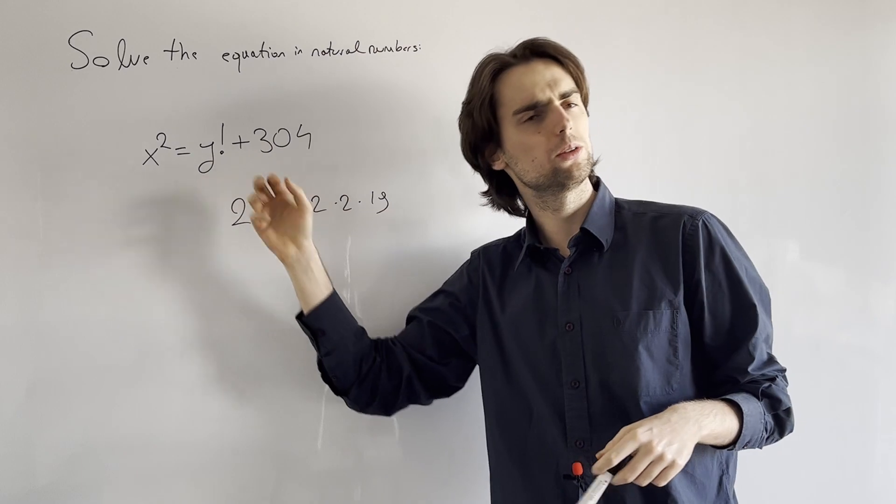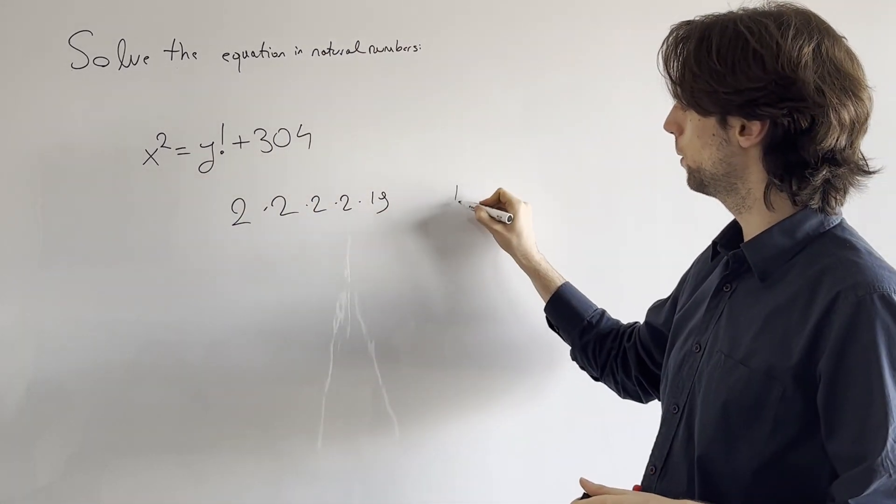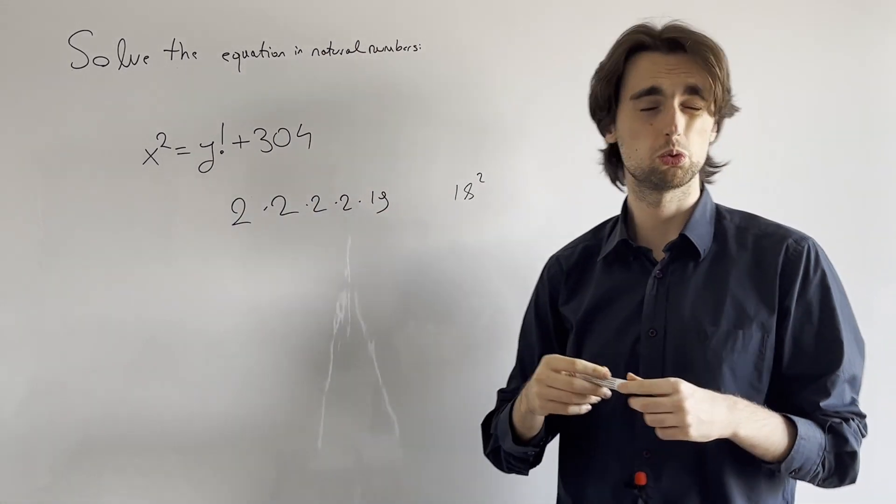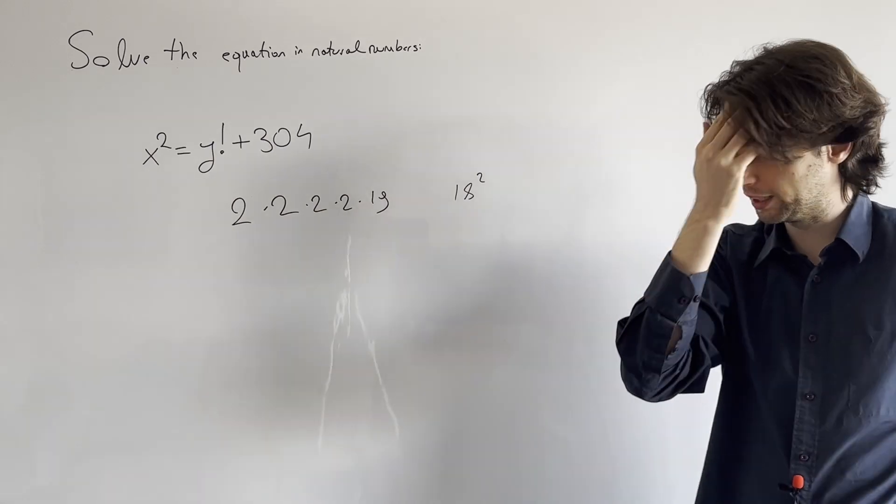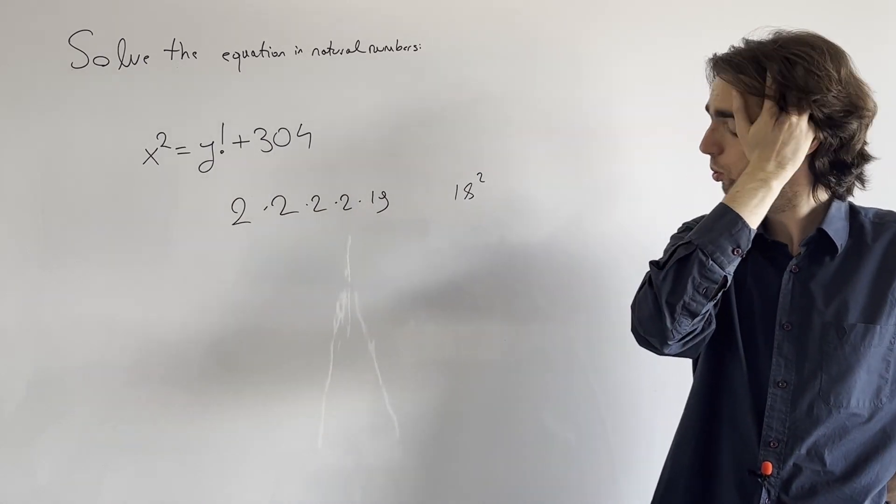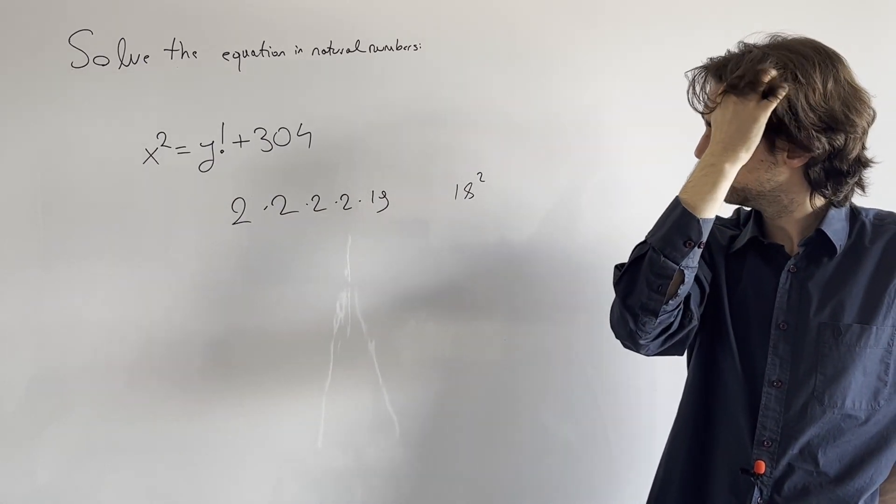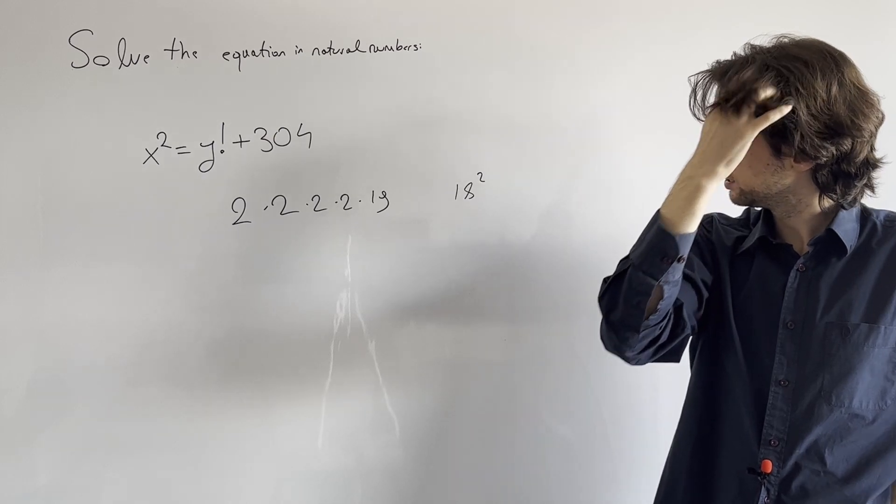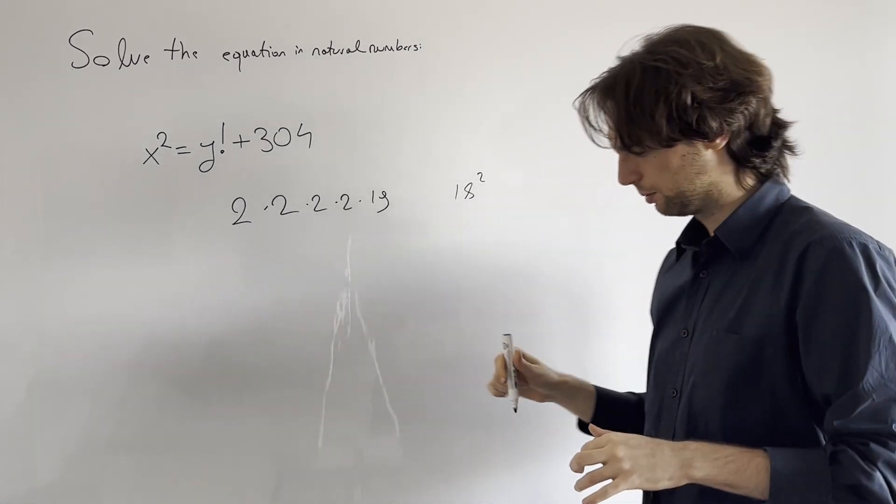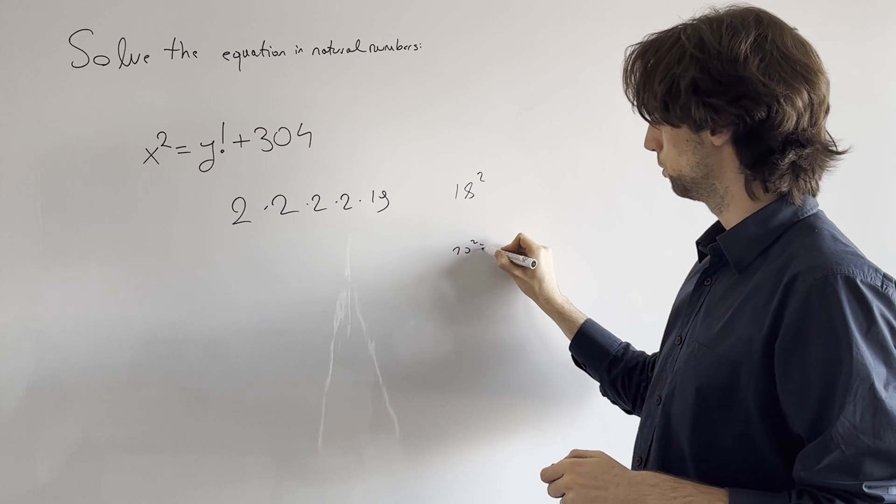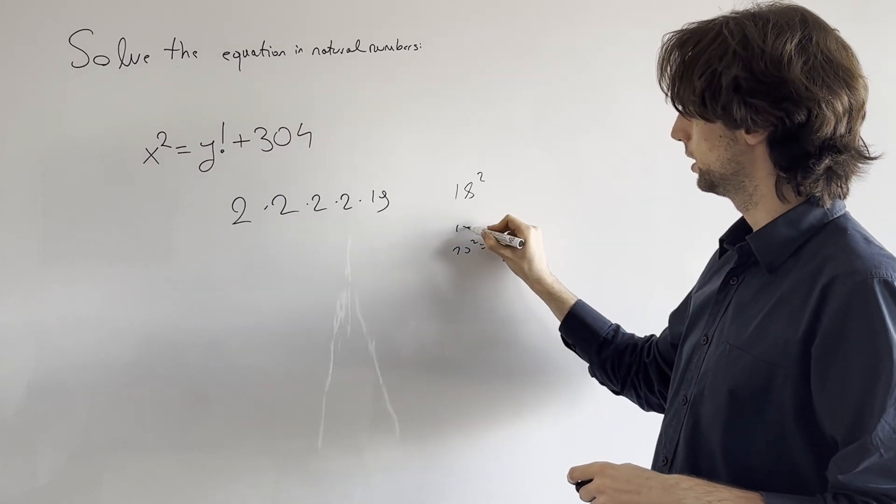So the only squares around this are like 18 squared, which is equal to 20 minus 2 squared. And I think we need to calculate a couple of these squares. So we have 20 squared, which is 400, 19 squared, which is 361.